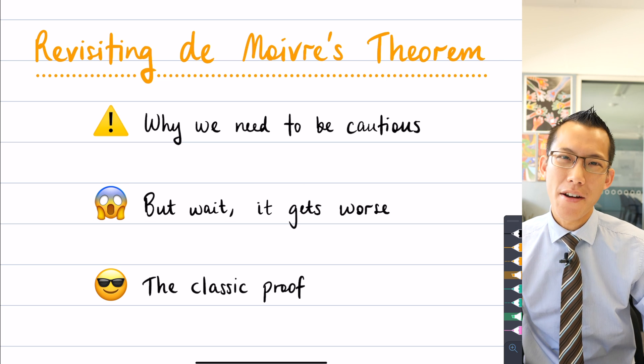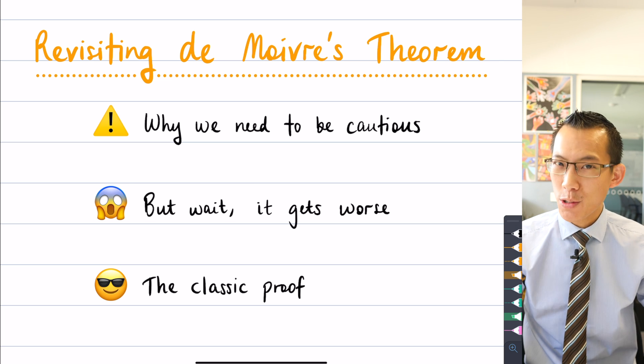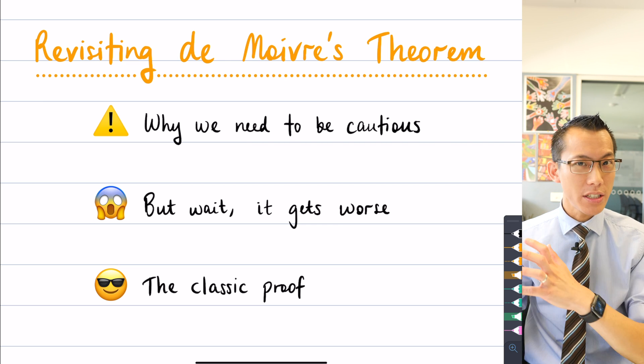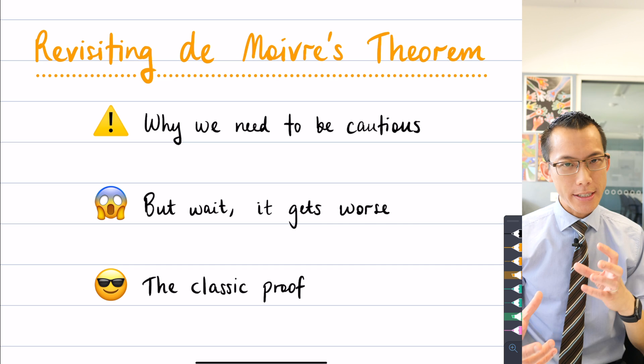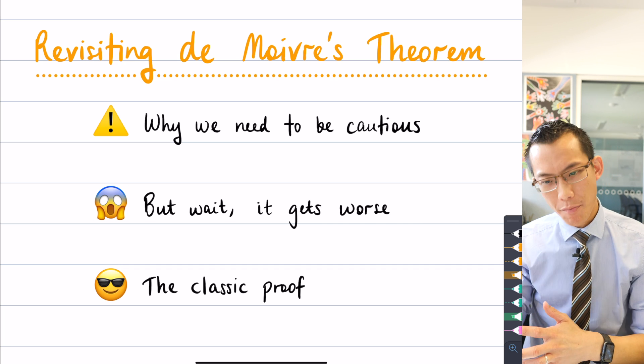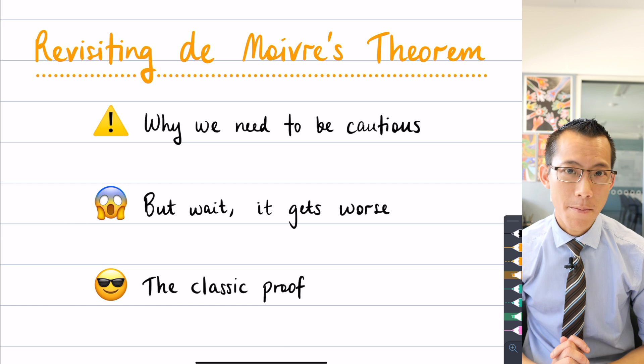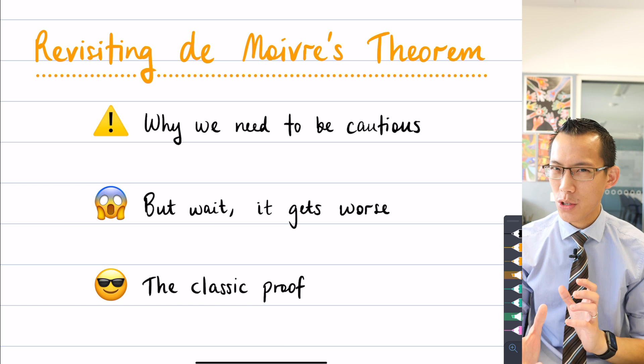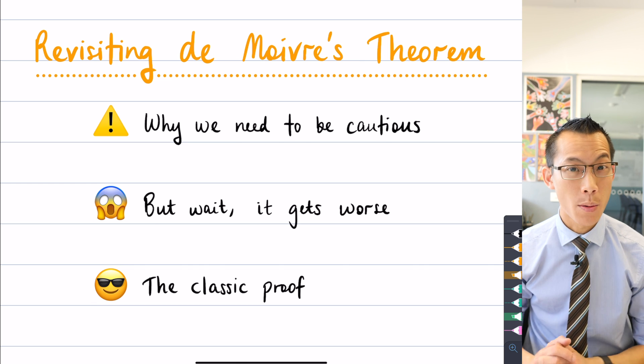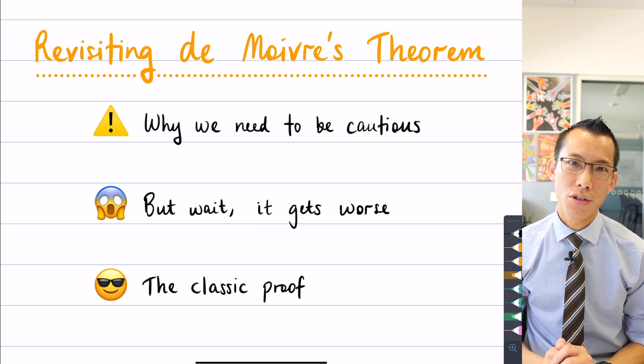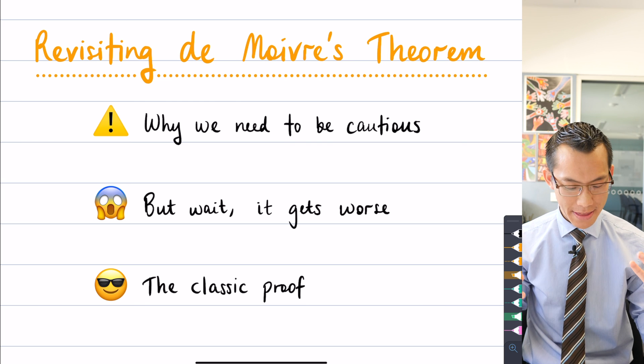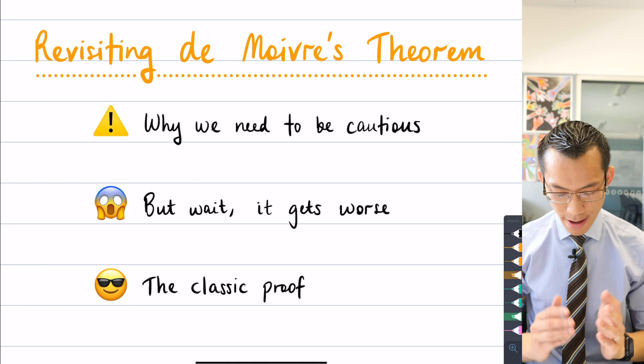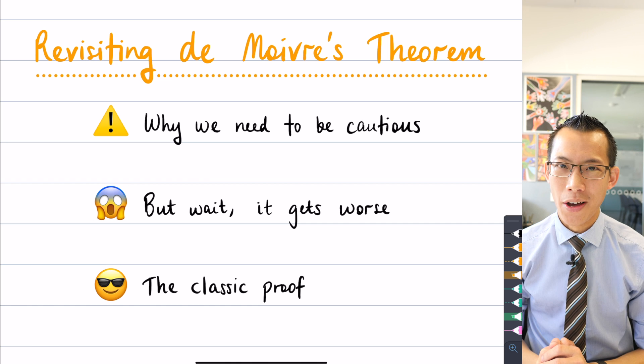Today we're going to revisit de Moivre's theorem. It's one of the most useful, interesting, and elegant parts of complex numbers, and we looked at it earlier on when exploring the different advantages of polar and exponential forms for a complex number. But as we're going to have a look at today, I want to show you that you have to be quite cautious and careful with de Moivre's theorem. I want to explain the reasons why, and then I'm going to show you how that provides the reason why there's this classic proof of de Moivre's theorem we haven't looked at within the course yet.